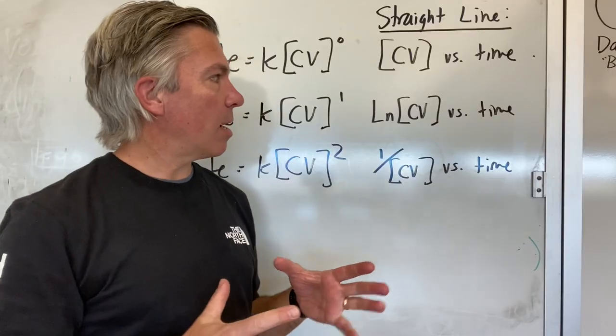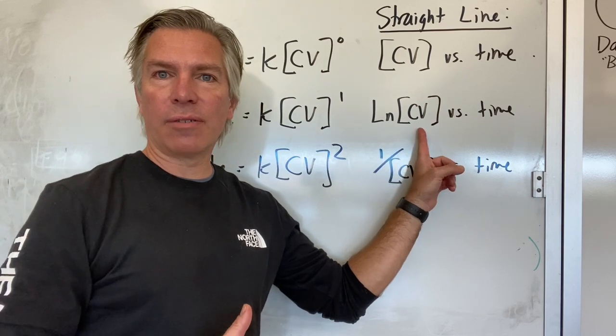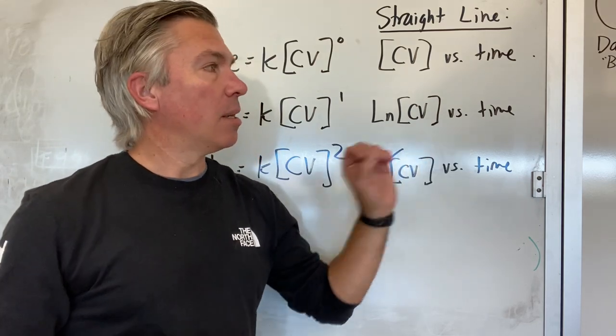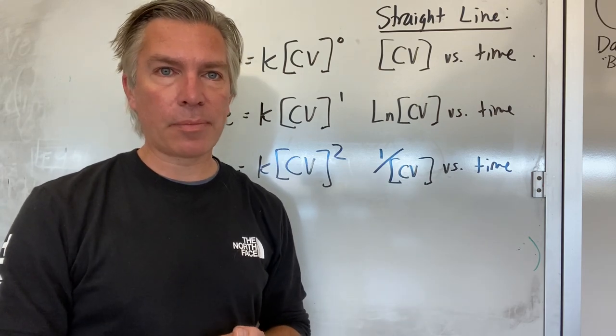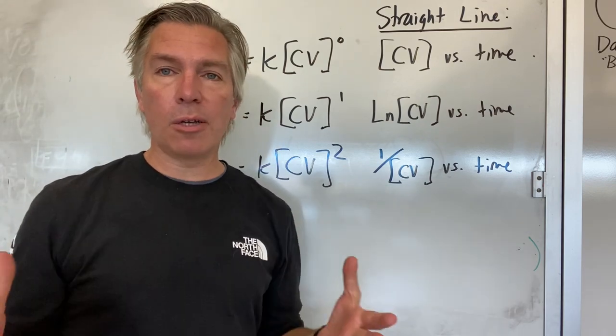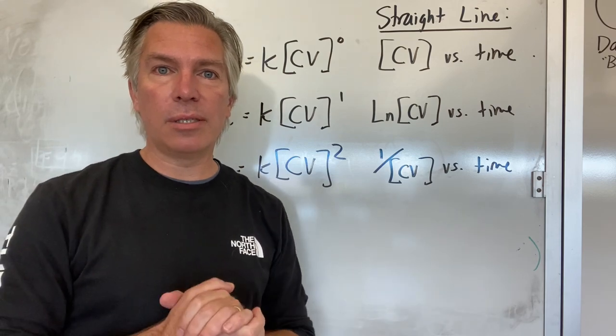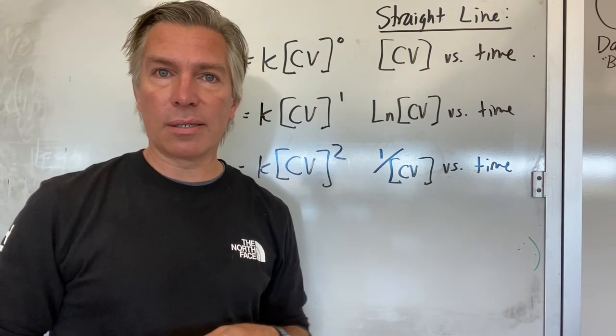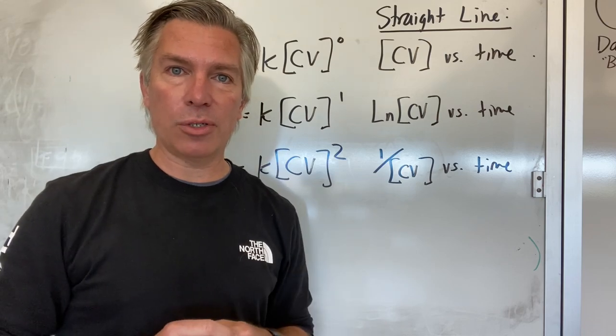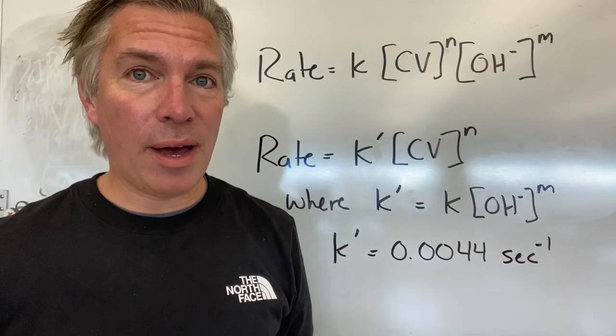So because the graph of the natural log of the crystal violet concentration versus time gave us a straight line, we know that this reaction is first order with respect to crystal violet. We also know that since the slope of the line turned out to be 0.0044, that gives me the rate constant for this reaction at this temperature.